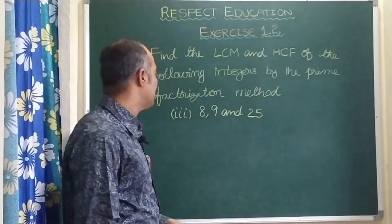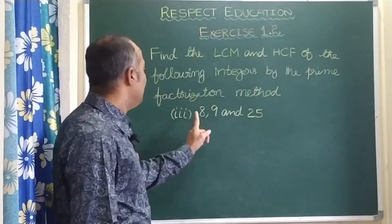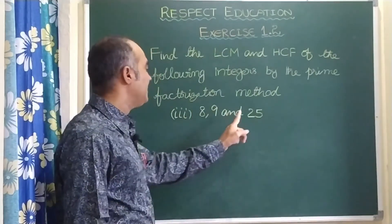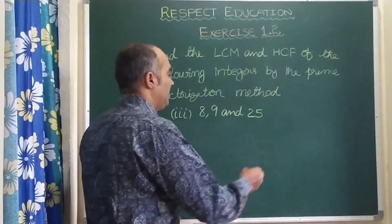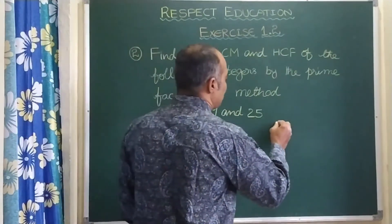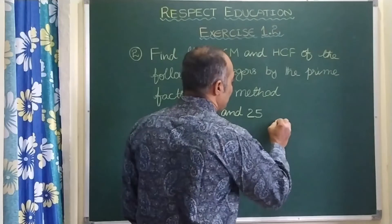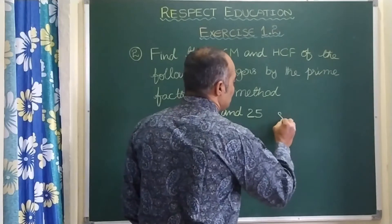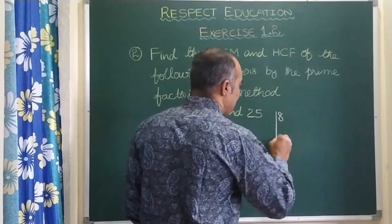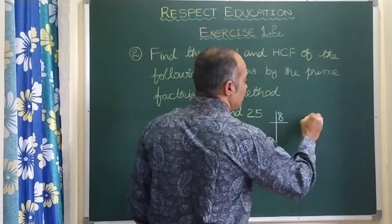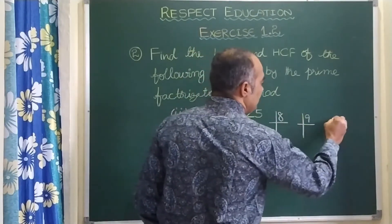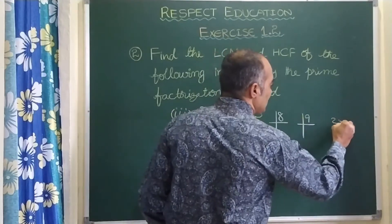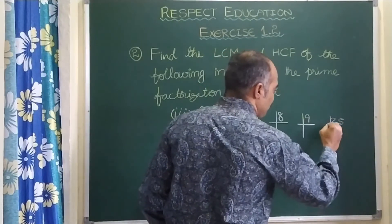Let us see the next bit, that is the third bit: 8, 9, and 25. So let us factorize them individually. So 8, 9, and then 25.